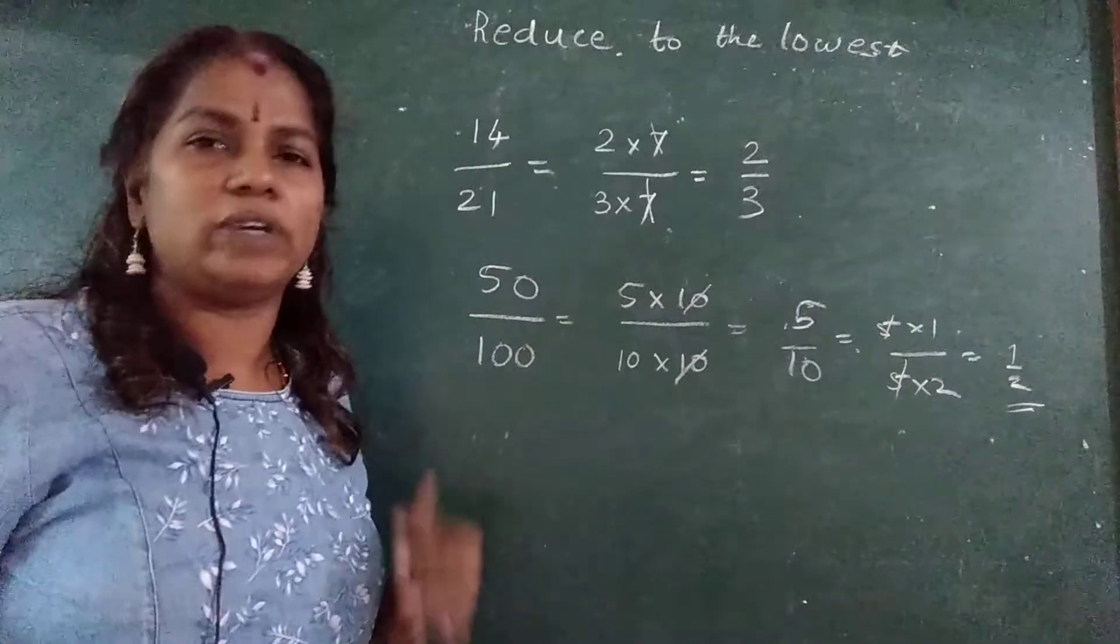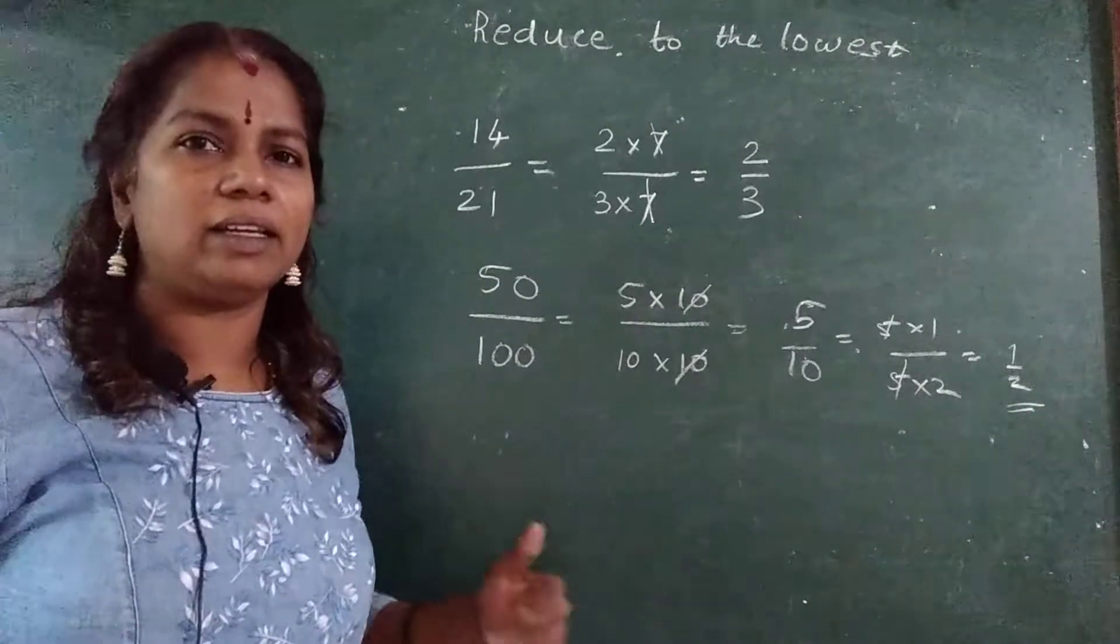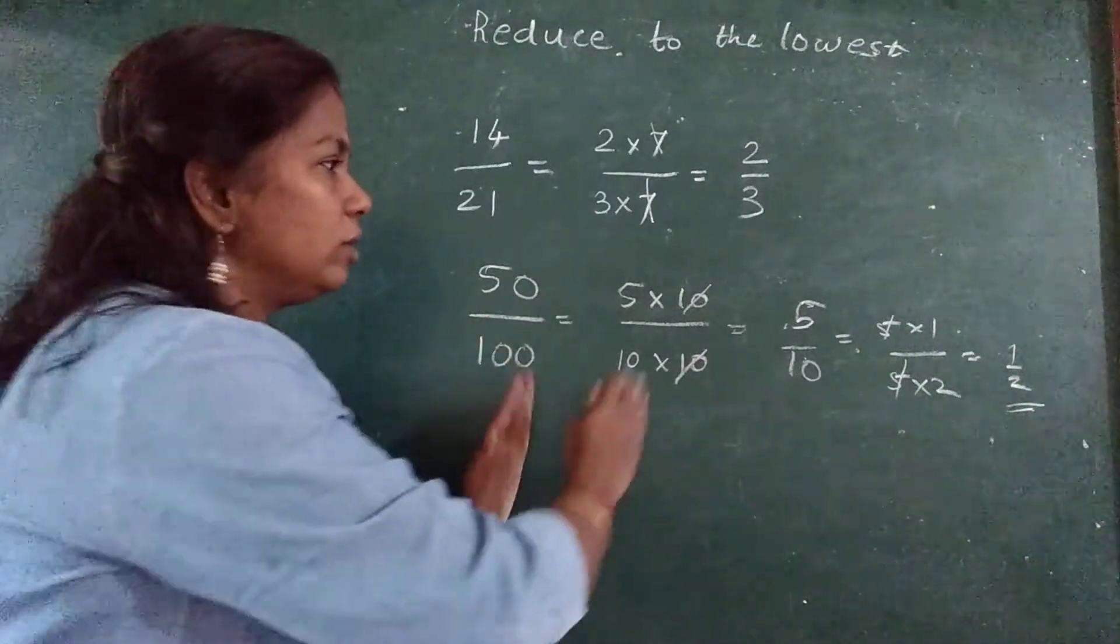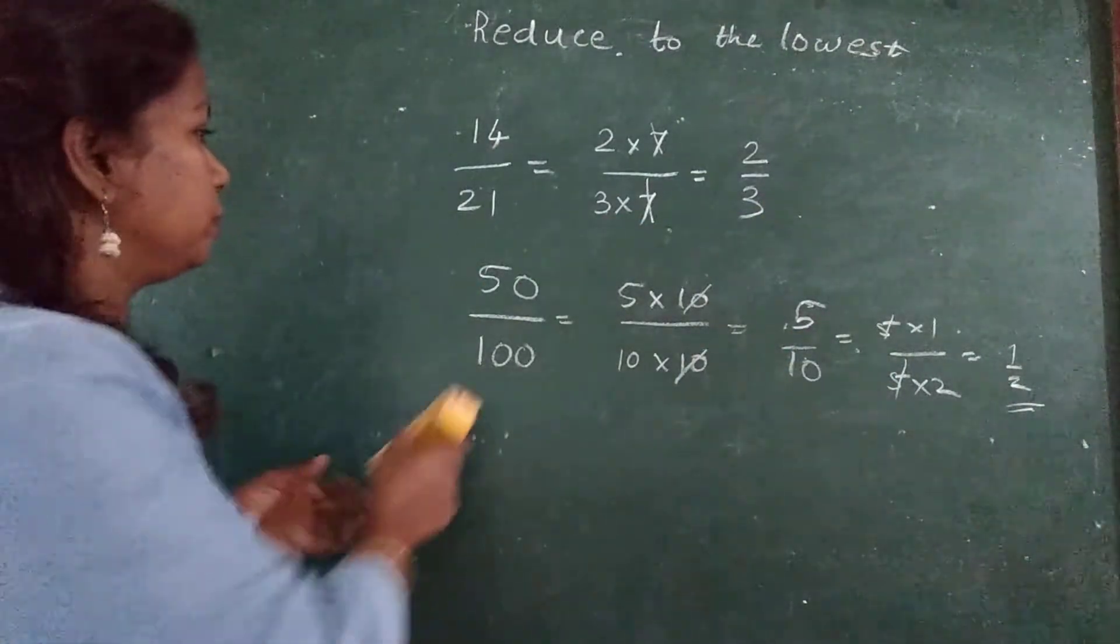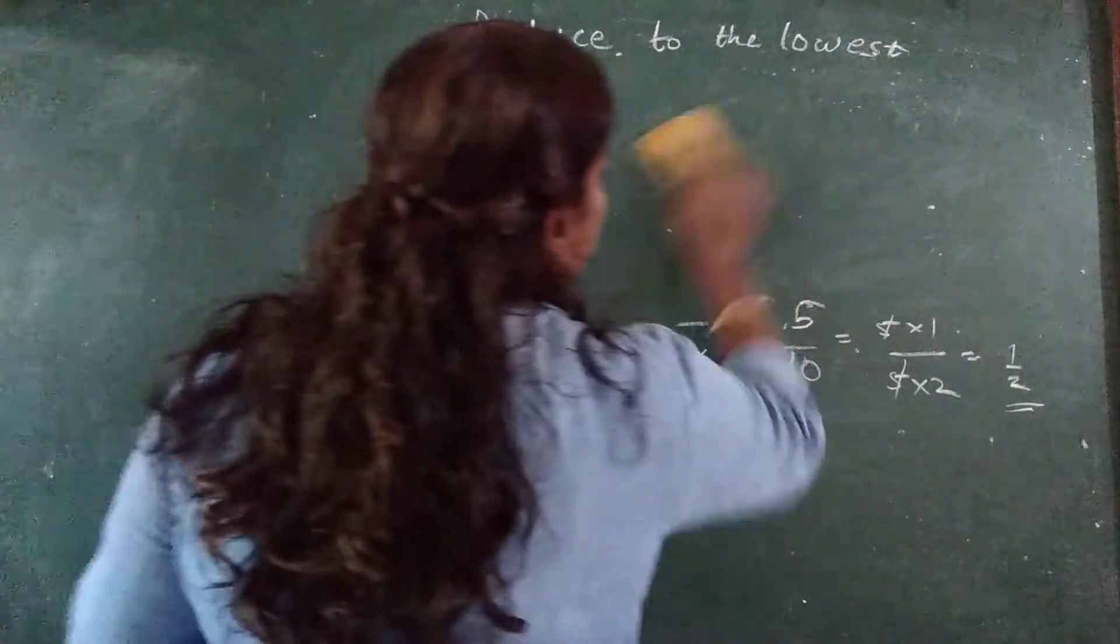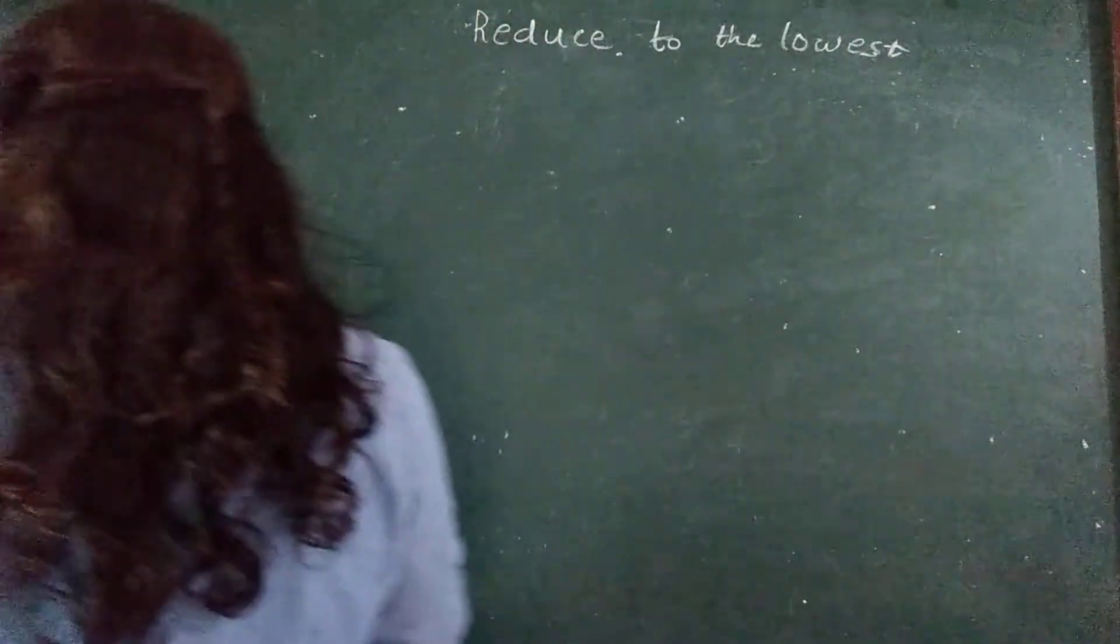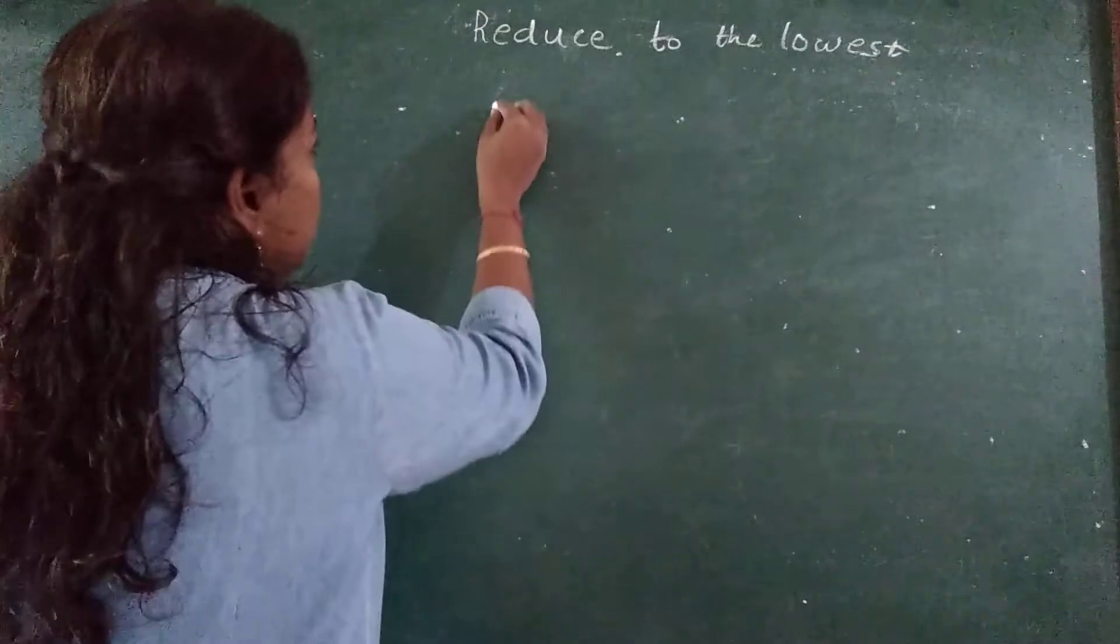If it is 4 digit number, 5 digit number, then what you have to do? You have to start with 2. First you divide with 2, then 3, then 4, like that. Go 2, 3 steps and go on reducing. Now one more sum I will tell you.